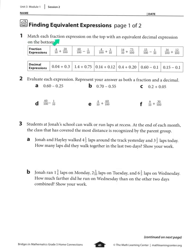Number 1 says match each fraction expression on the top with an equivalent decimal expression on the bottom. Here we see 4 tenths plus 20 hundredths. I'm looking for maybe a 4 and a 2. I see only one of them has a 4 and a 2. The 4 is in the tenths place and the 2 is in the tenths, but there's a 0 there meaning it's 20 hundredths. So this matches the first one.